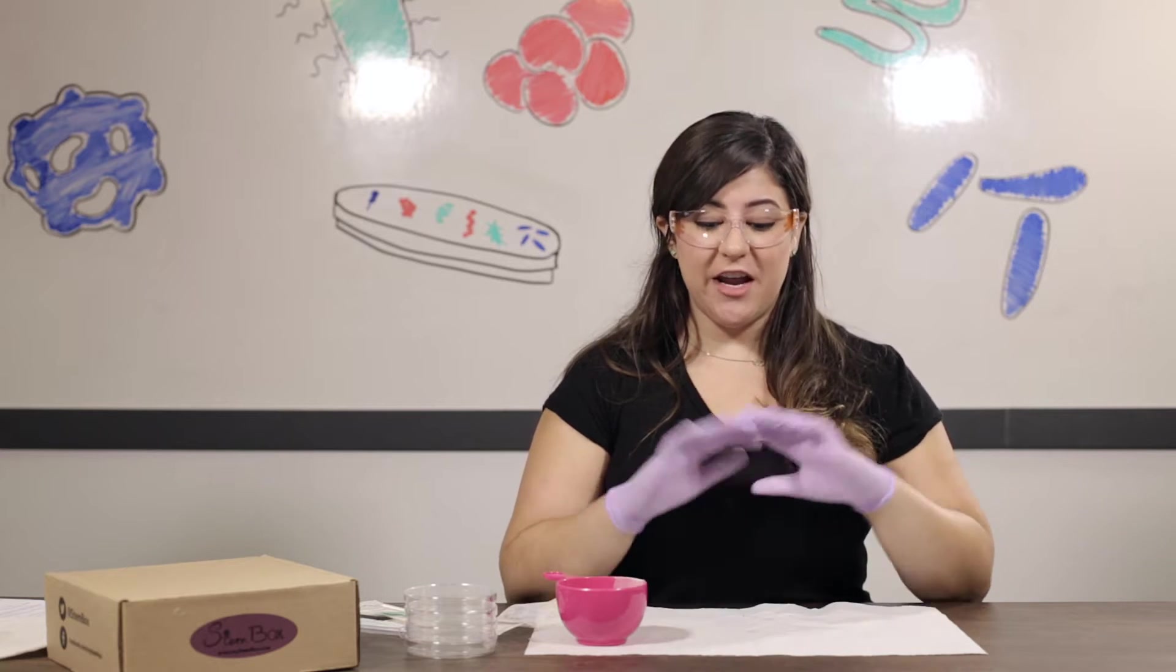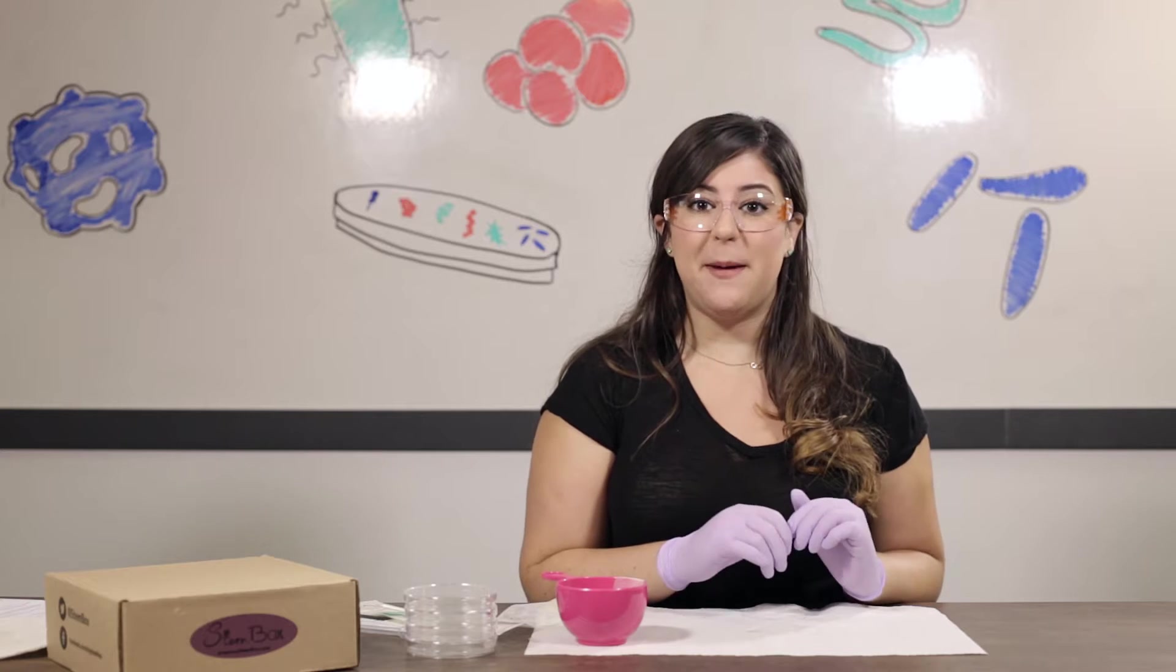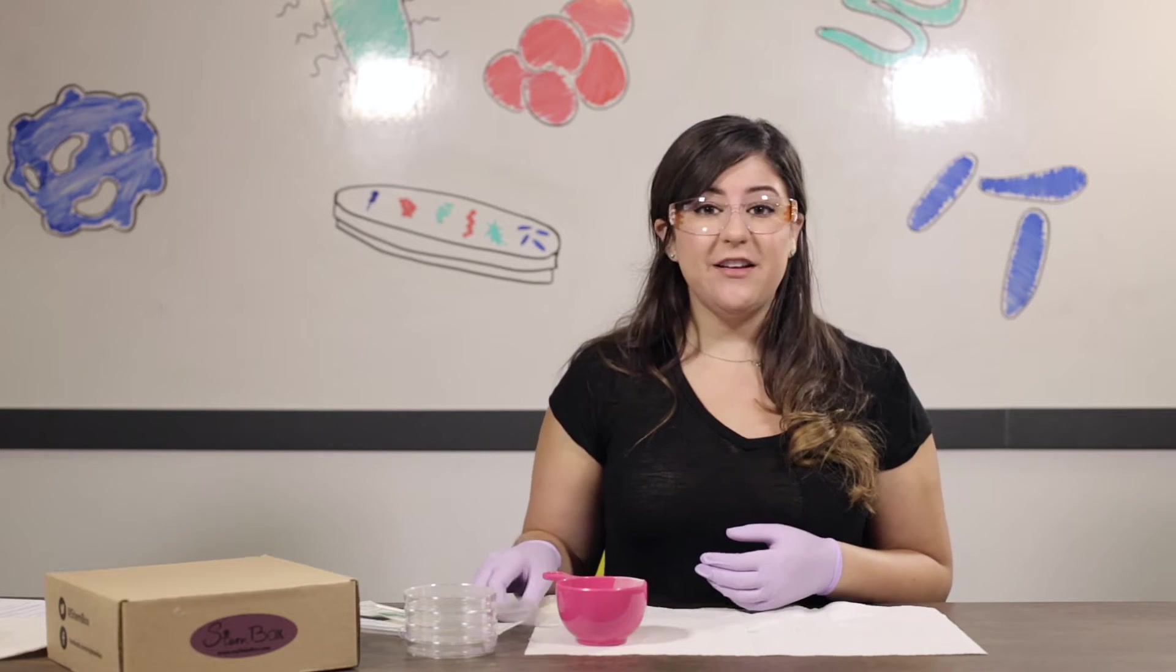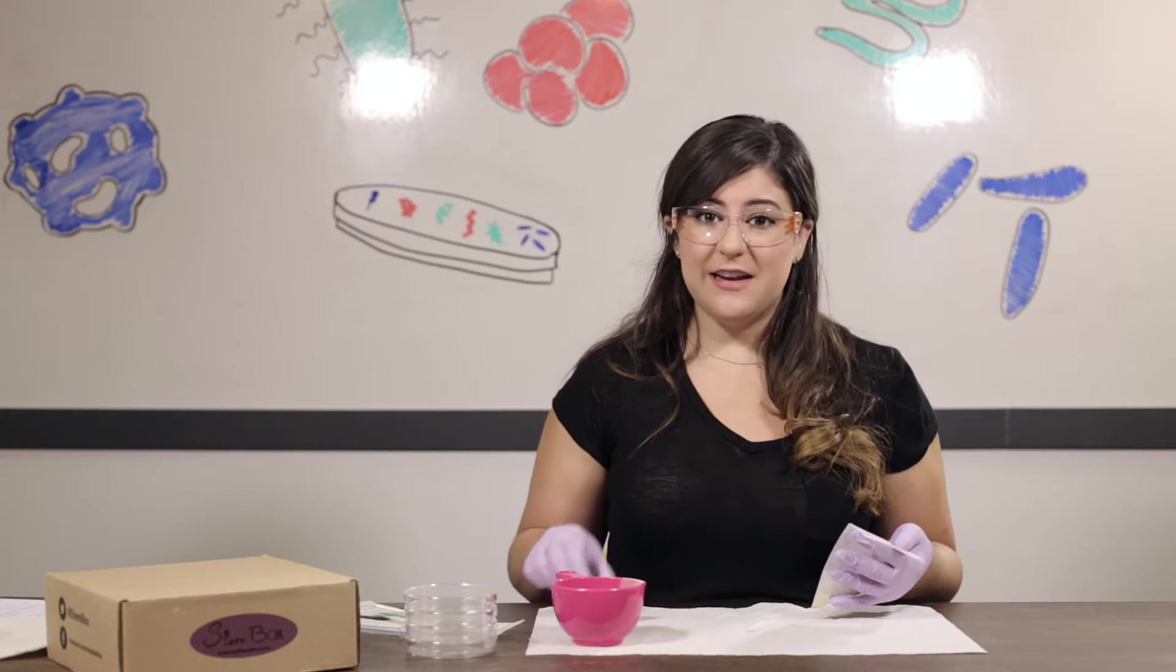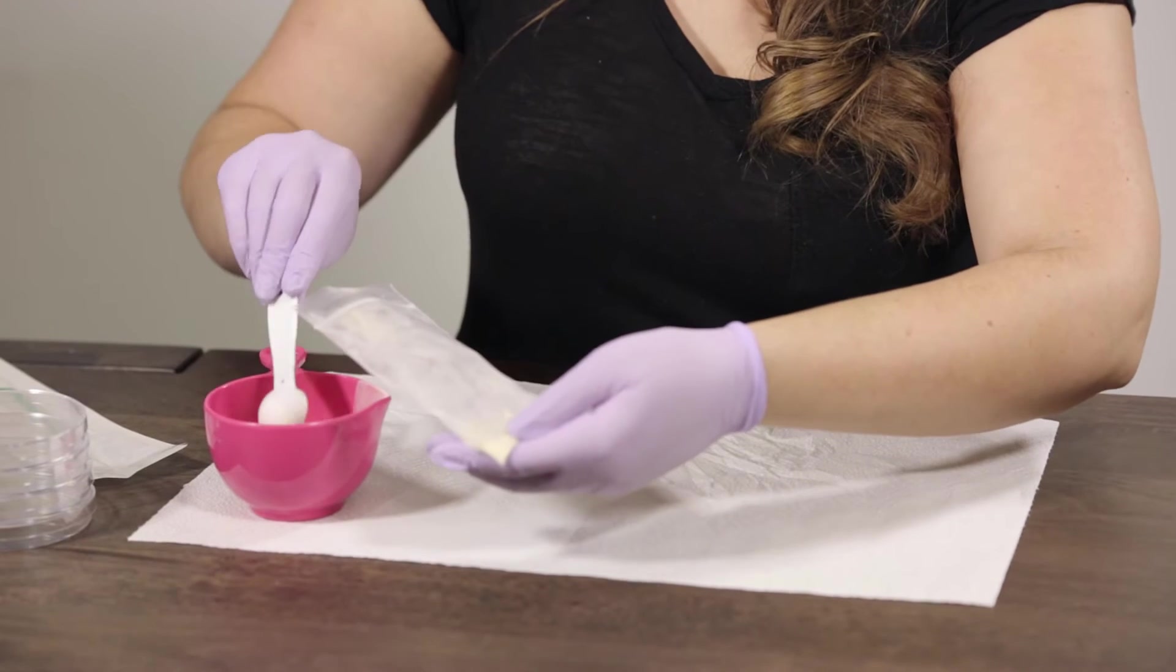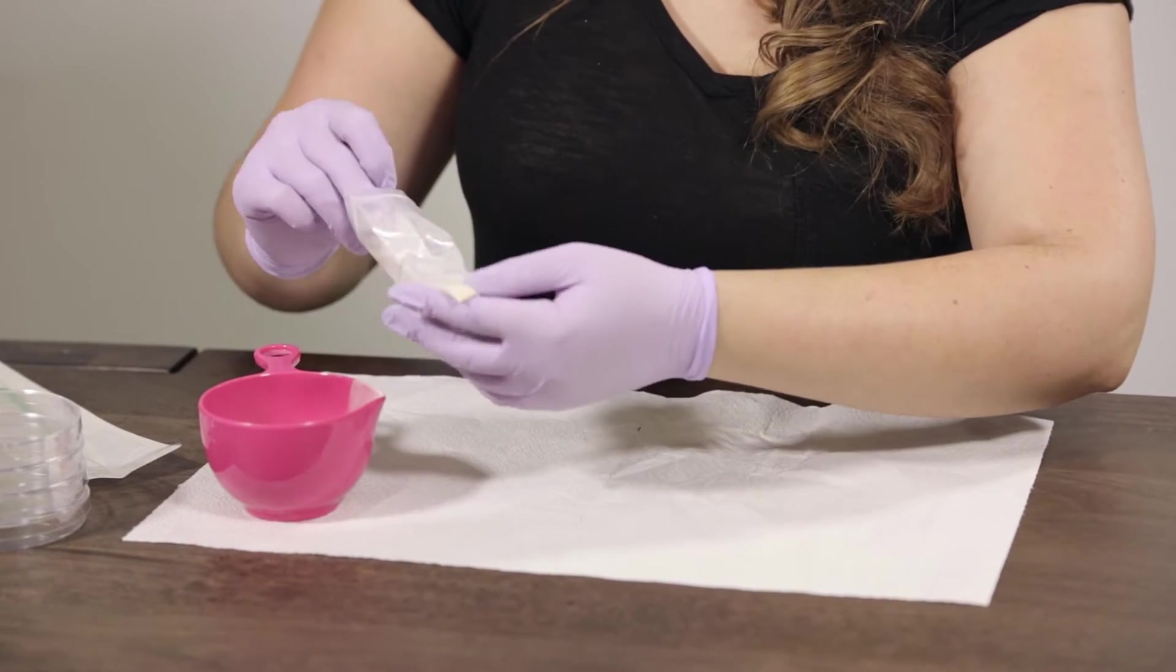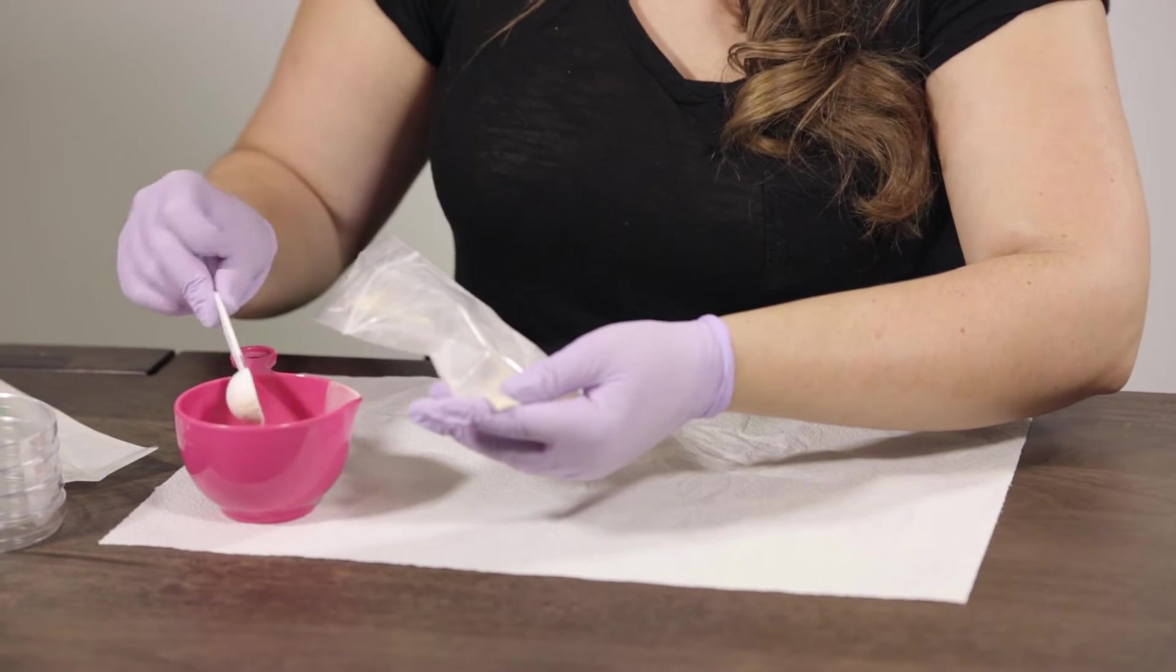Now that we have our safety gear on and our lab space set up, the first step is creating our nutrient agar plates that our bacteria are going to grow on. For this step you're going to need your nutrient agar packet, a measuring cup, and a teaspoon. So we're gonna measure out a heaping teaspoon into our measuring cup. And you can put a little extra because the thicker the better for growing your bacteria and the quicker your plate will set.